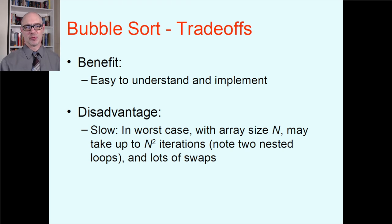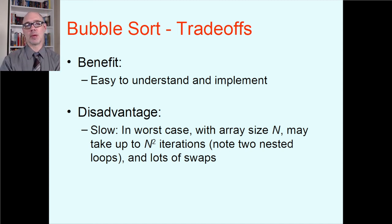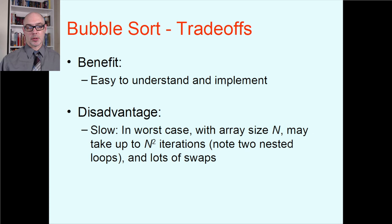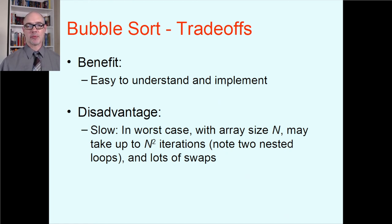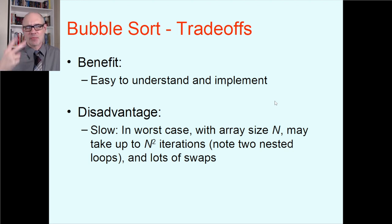That can get big pretty fast. If I have an array of size 10 and bubble sort it, I might need as many as 100 iterations. It also does a lot of swaps, and writing information to memory is slightly slower than just reading from memory. So all these swaps and copies take quite a bit of CPU time. It's a simple algorithm but it's a little slow, so when we consider other algorithms we'll be hunting for something faster — hopefully less than n squared total iterations.